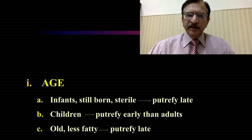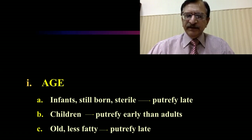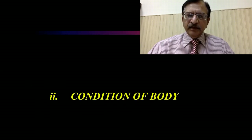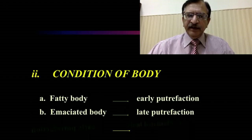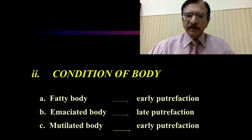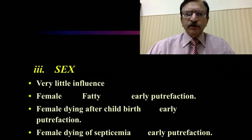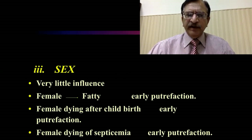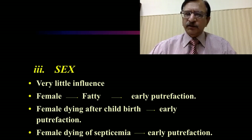Regarding internal factors: age — infants and stillborns, which are sterile, putrefy late; children putrefy earlier than adults; the old and less fatty putrefy late. Condition of the body: in fatty individuals, putrefaction is early; in emaciated individuals, it is late; if mutilated, putrefaction is early. Regarding sex, it has little influence, but females, being more fatty, putrefy early. Females dying after childbirth and females dying of septicemia also putrefy early.